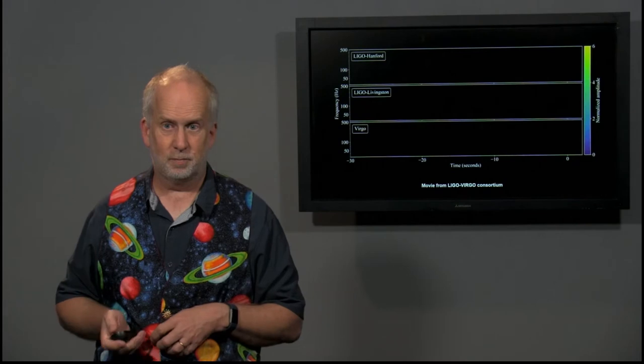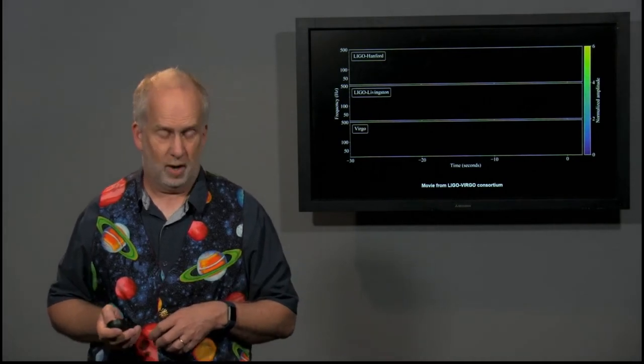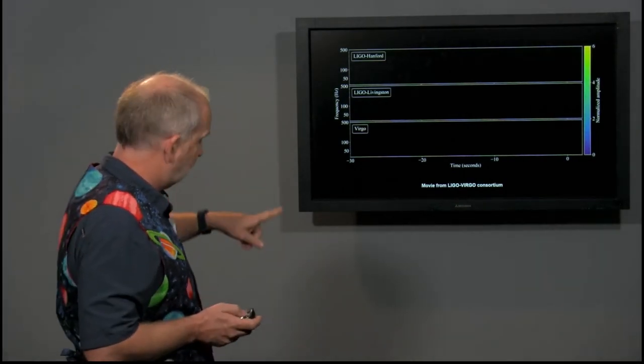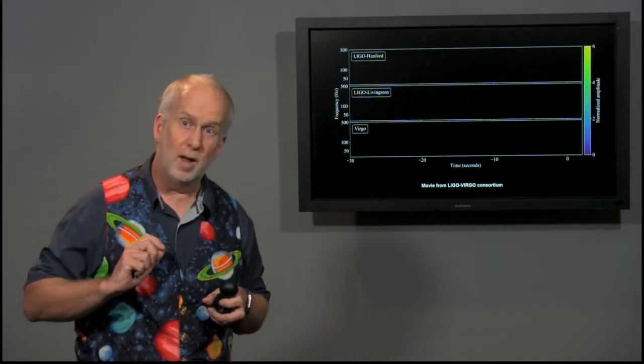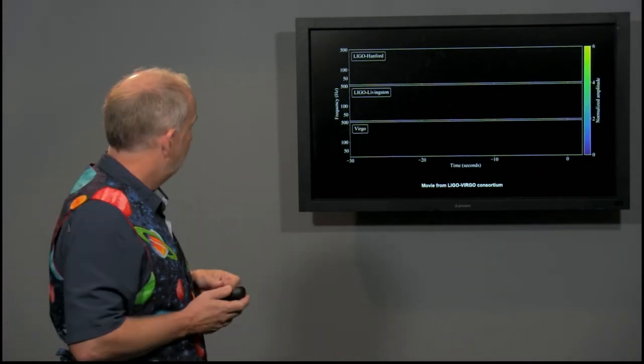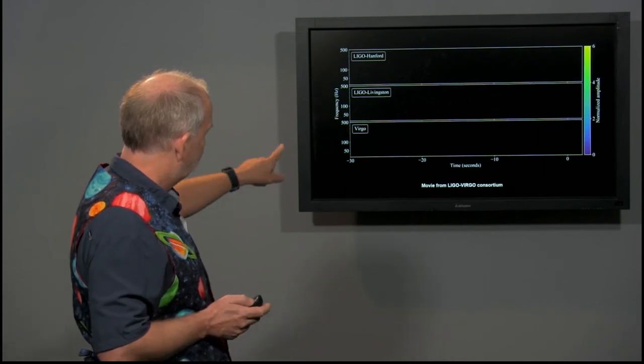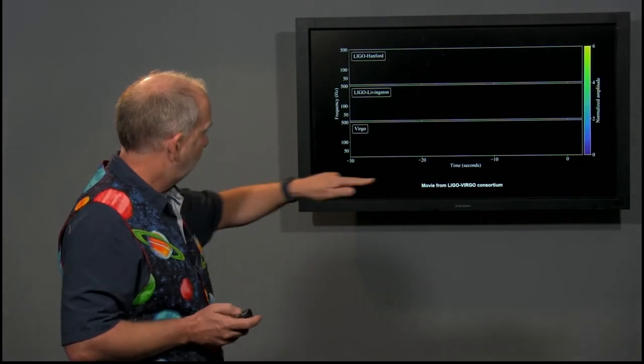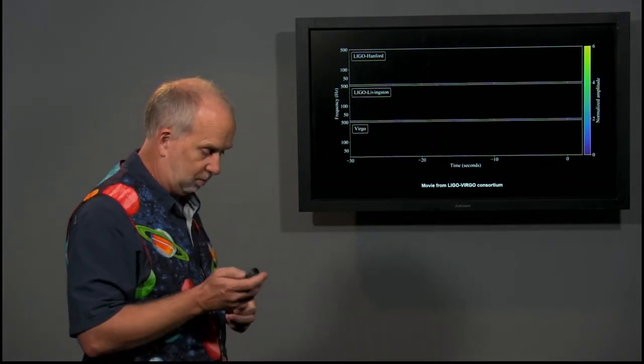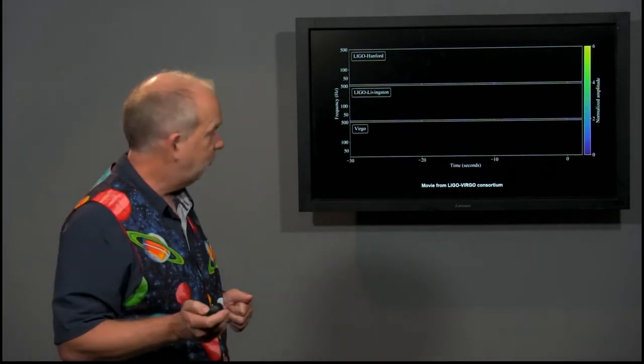Here's what the data looks like. We've got three different detectors—you need three different detectors to get triangulation on the sky of where the gravitational waves are coming from. There's two LIGO detectors in the U.S. and the Virgo one in Italy. Each plot shows vertically the frequency and horizontally the time before the burst, and there's sound effects to go with this.